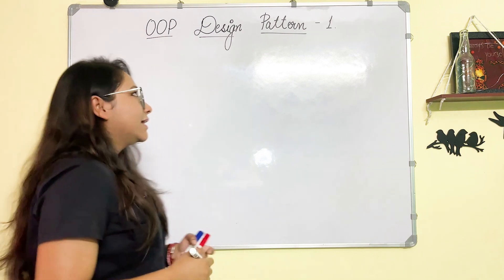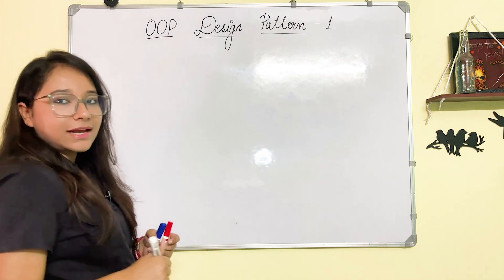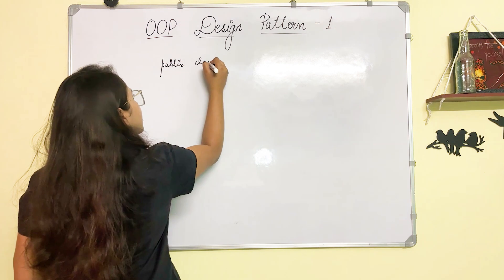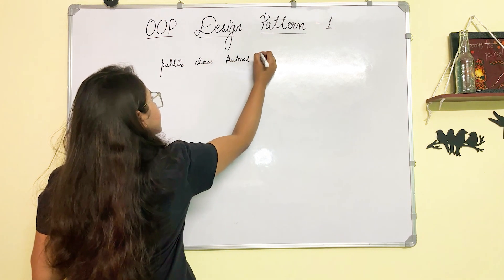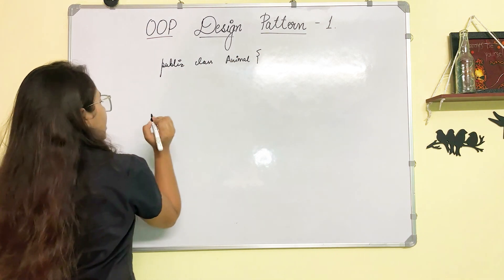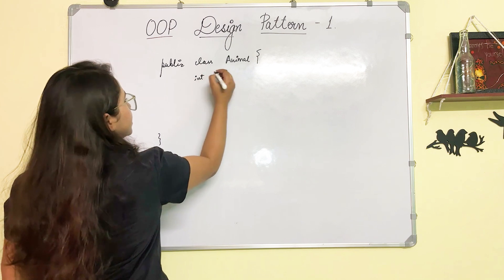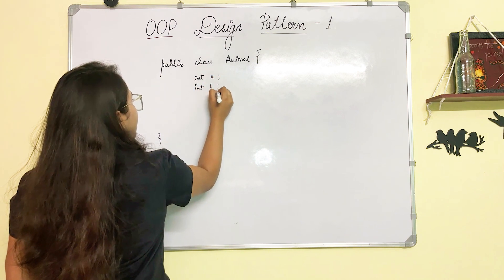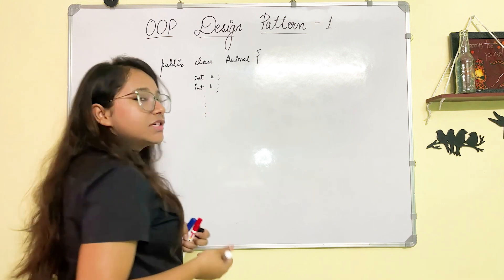So let's take an example first to understand what are design patterns. I'm writing a class, let's say public class Animal, and now this class can have multiple class members, right? Let's say int, for simplicity I'm just calling it as a, similarly b, and you will have a lot of class members like this.